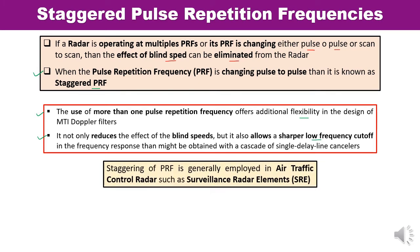Staggering of PRF is generally employed in air traffic control radar, like surveillance radar element SRE. This shows how important staggered PRF is — it is commonly employed in air traffic control.